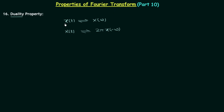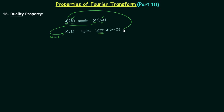Initially we have a time domain signal x(t), where t is the independent variable representing time. This signal has the Fourier transform X(ω), where ω is the independent variable representing angular frequency. Now take this signal and replace ω by t — you will have a time domain signal X(t). When this happens, this signal will have a Fourier transform equal to 2π multiplied by x(t) when t is replaced by −ω.